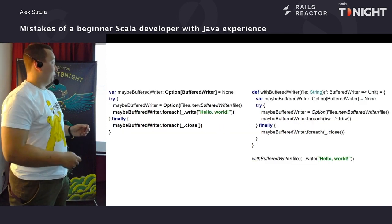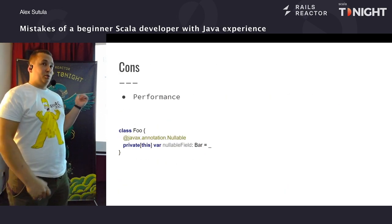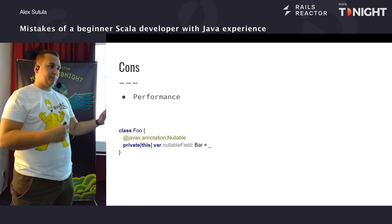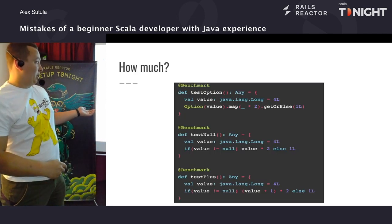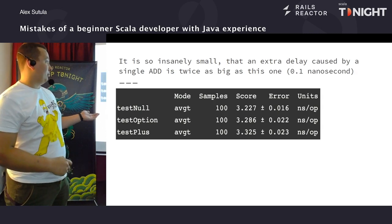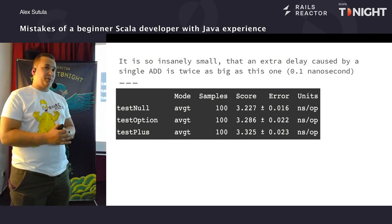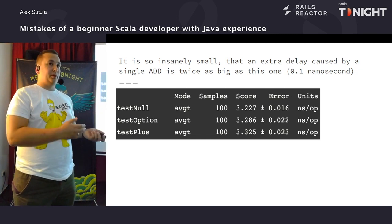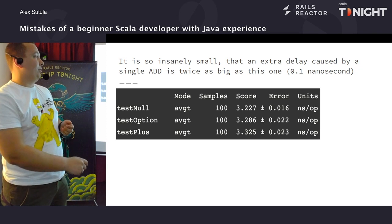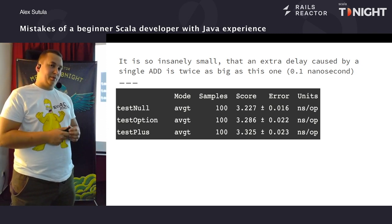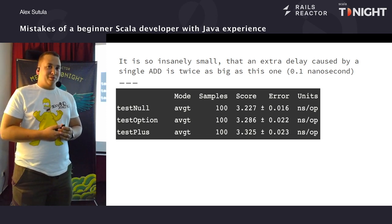Щодо перформансу: є думка, що Option, так як це обгортка, воно обгортається, і це певна операція — вона додає операції і може знизитись перформанс. Але по суті тестування і дійсно вимірювання цього показує, що сказати, що Option критичний для перформансу — це так само сказати, що оператор додавання критичний для перформансу. Там навіть використання Option вдвічі менше загружає наш CPU. Я не можу знайти позитивних якихось прикладів використання null.